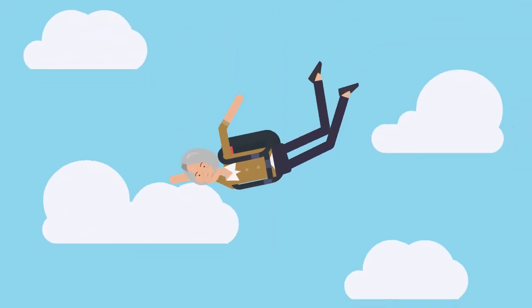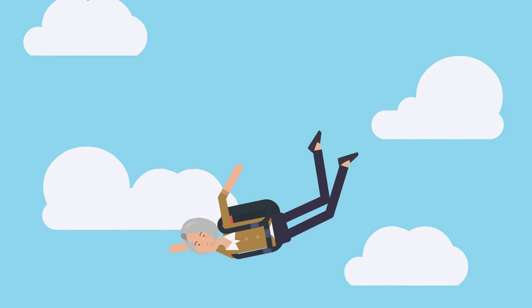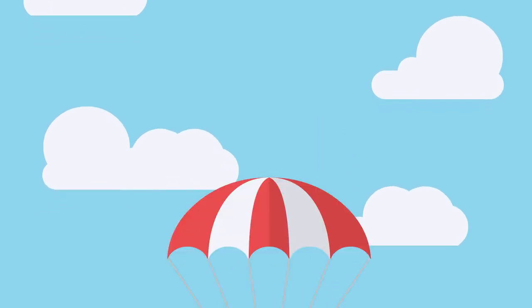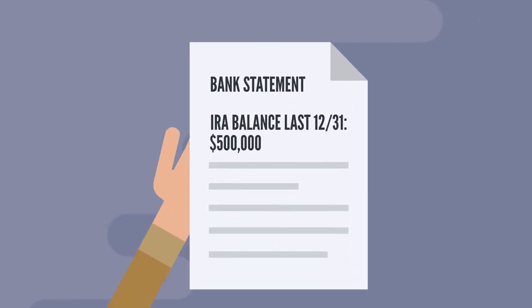Let's say Alice is a 73-year-old widow who owns a traditional IRA. As of December 31st of last year, her IRA had a balance of $500,000.